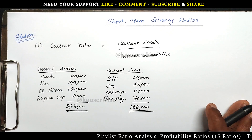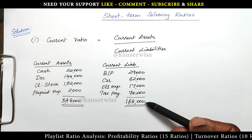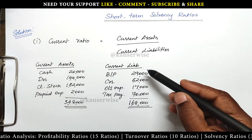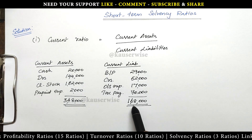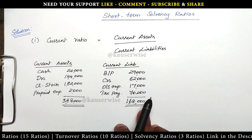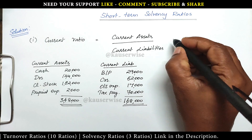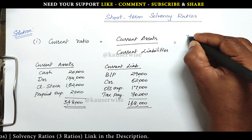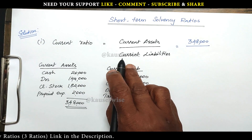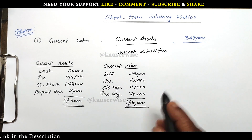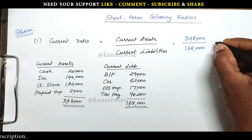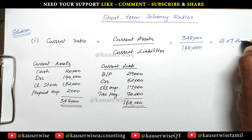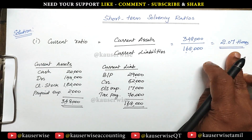We have calculated current assets and current liabilities. Current assets total is 3,48,000 and current liabilities total is 1,68,000. Now substitute the values in the formula: 3,48,000 divided by 1,68,000 equals 2.07 times. So this is the current ratio.